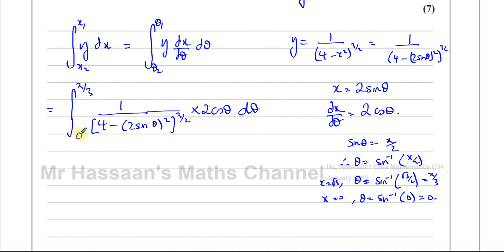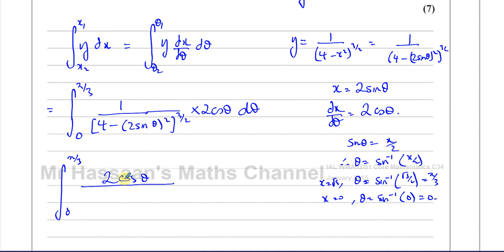Now we have everything in terms of θ — y, dx/dθ, dθ, and the limits in radians. We're ready to simplify. The integral from 0 to π/3 of 2cosθ over (4 minus 4sin²θ)^(3/2) dθ. First step: expand (2sinθ)² = 4sin²θ, so the bracket is 4 minus 4sin²θ to the power of 3/2.